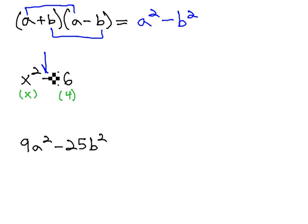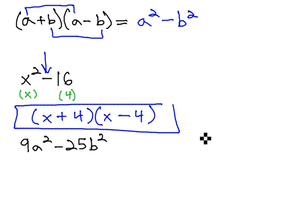Because we're subtracting—subtraction's important—because we're subtracting two things we can take the square root of, it's going to factor to the sum and difference of the square roots. It's going to be x plus 4 and x minus 4. And we're done.